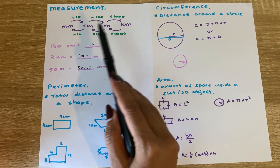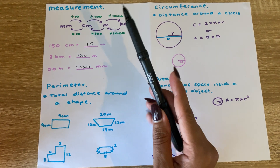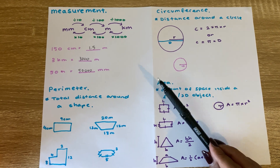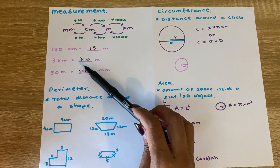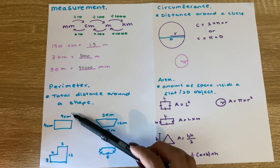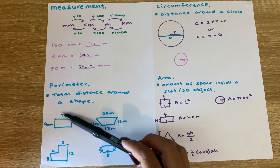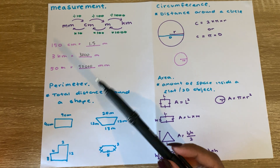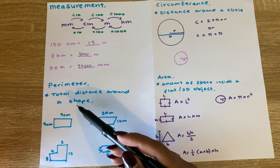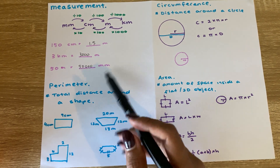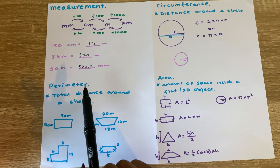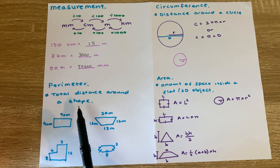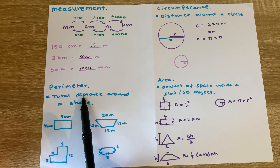This is important because when we are calculating perimeter or area of different shapes, we need to make sure that all of the units around the shape are the same. If the units are different, you might have to convert them to be the same unit.